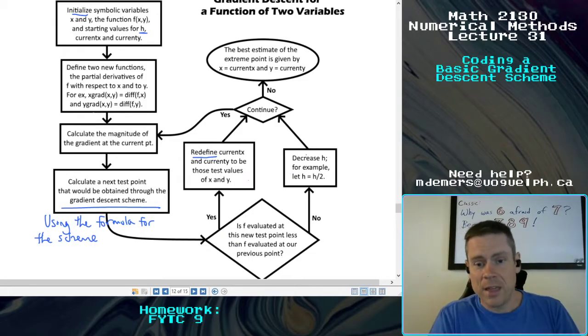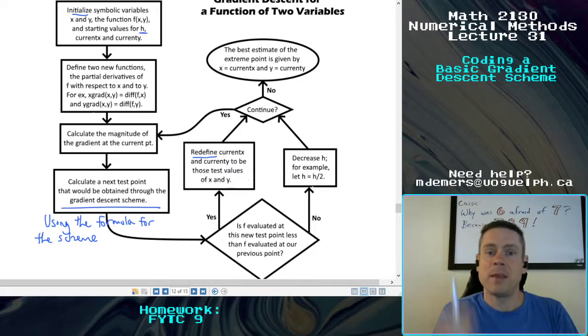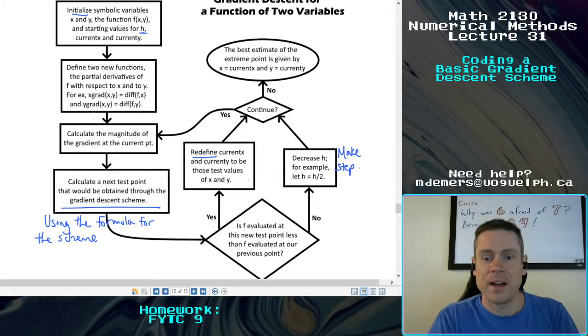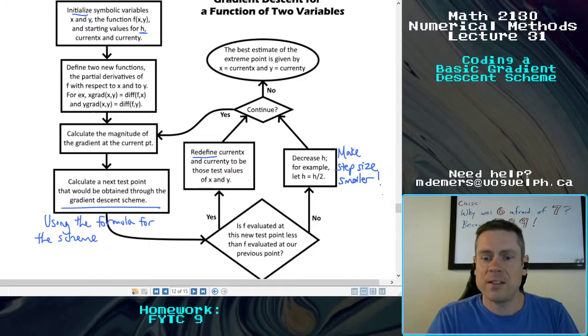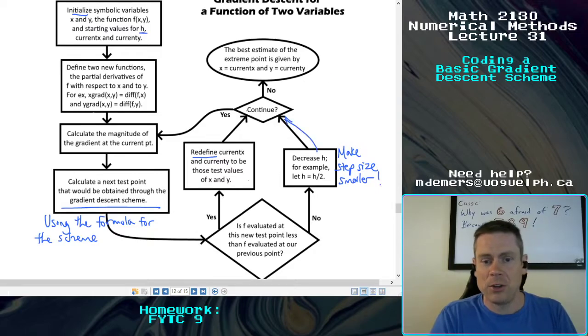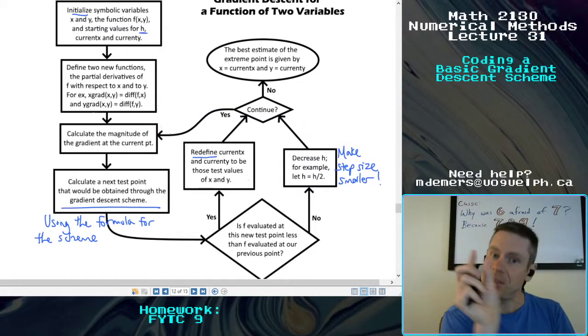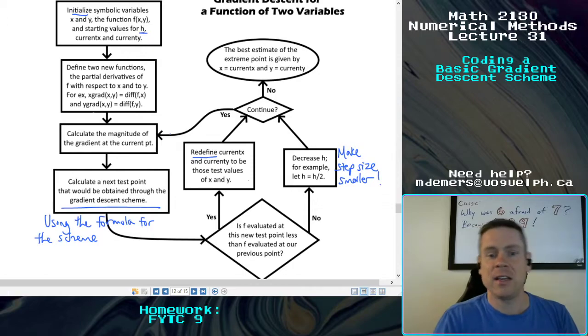If it's not, then you decrease the h, you make that step size smaller and you don't redefine a darn thing. So with that smaller step size, you don't redefine anything and you continue through the loop potentially. And assuming that you do, you're back here. You can construct the scheme again, but this time with a smaller h and see again, and loop around and so you do get something that's better.